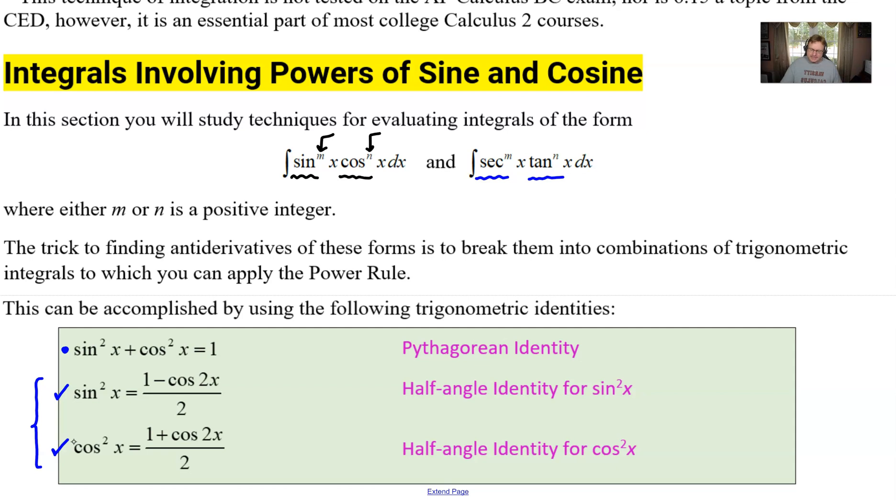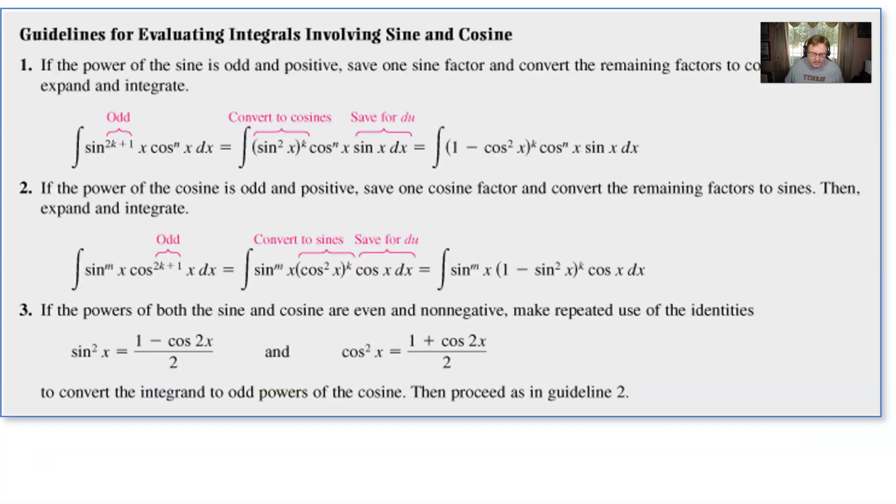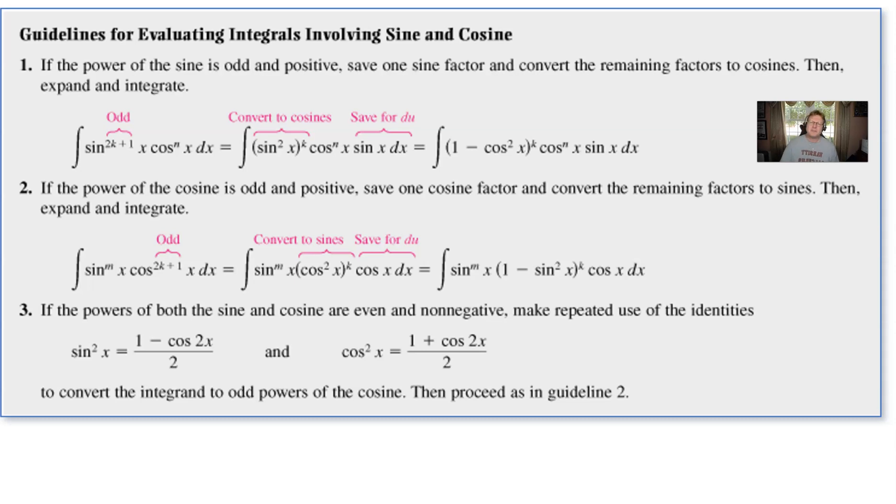Now with that being said if we were going to focus a little bit more intently on forms that involve sine and cosine as we prepare for our example one what we're going to see here is really one of three things happening in this case we might have the power of a sine that's odd and of course positive or we might have the power of cosine that's odd and positive.